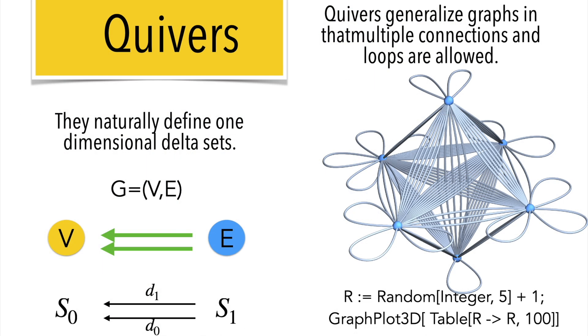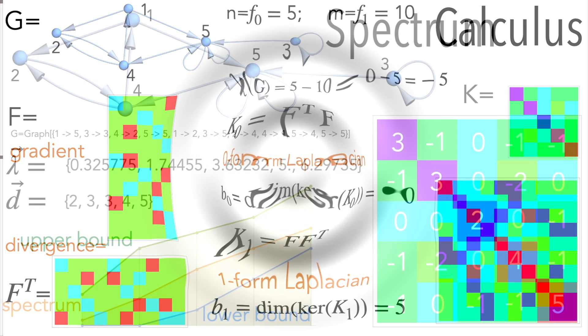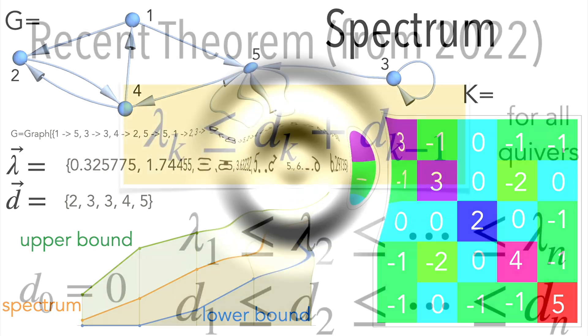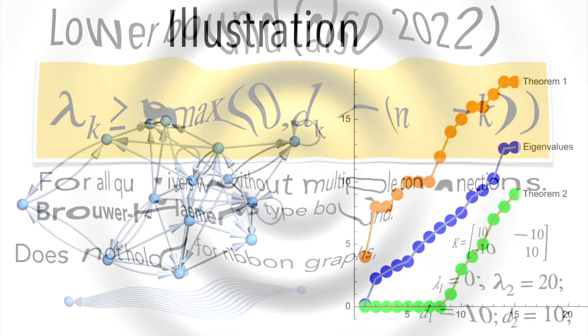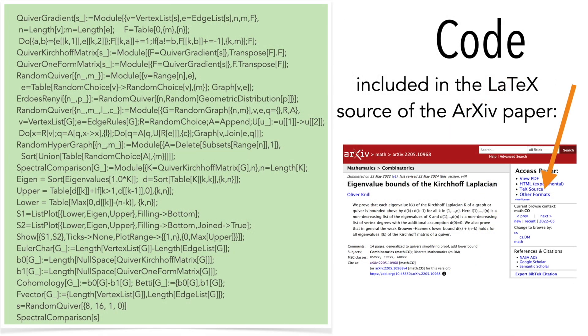Quivers are more general than graphs in that also multiple connections or loops are allowed. They define a natural one-dimensional calculus. I used this recently in a paper dealing with a spectrum of quivers, eigenvalues of the Kirchhoff Laplacian. So there is an upper bound and there is a lower bound. And here is an illustration of this eigenvalues are sandwiched between this upper bound and lower bound. And here is the code which illustrates this. It can be accessed from the latex source on the archive.